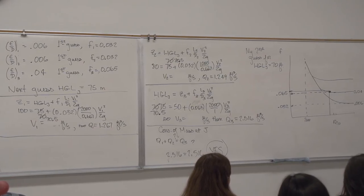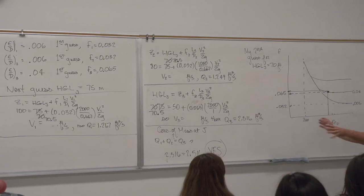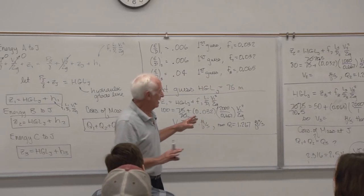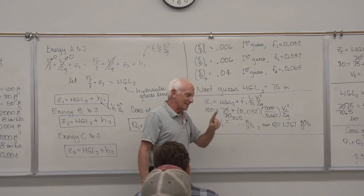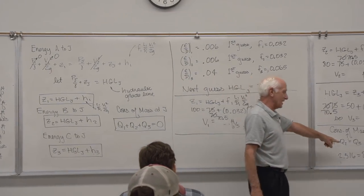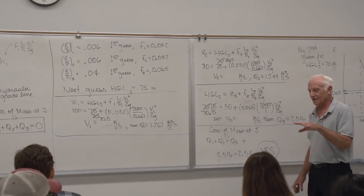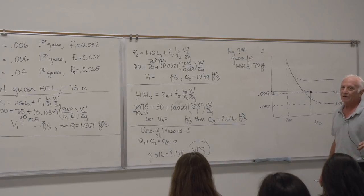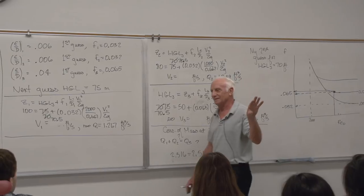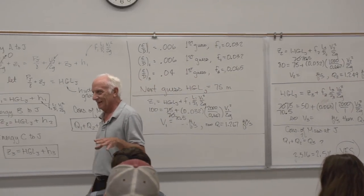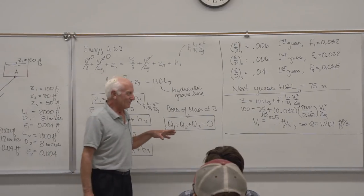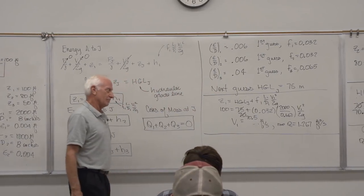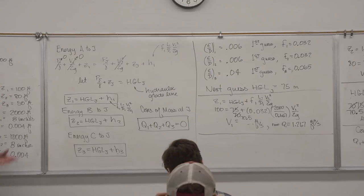On a homework or exam you won't be asked to go through all that iteration. On an exam I'd say: go through it once with a reasonable guess for HGL_J, solve, check conservation of mass, but don't iterate further. Often textbooks will give you the F values — then you only need to guess HGL_J. In the real world you go through all the gory detail; that's what you get paid for.